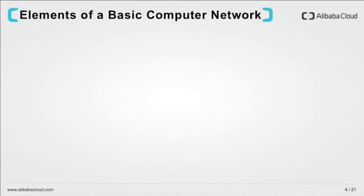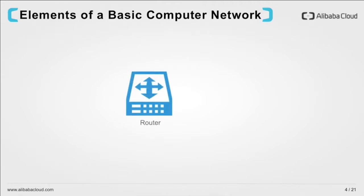Now let's look at the elements of a basic computer network. At the core is a router. The basic function of the router is to direct traffic between different networks — may it be traffic coming in and going out of the internet or traffic flowing between different internal segments. For simplicity's sake, let's assume that a network segment is represented by a subnet. So when we are trying to make subnets talk to each other, the traffic needs to go through the router.